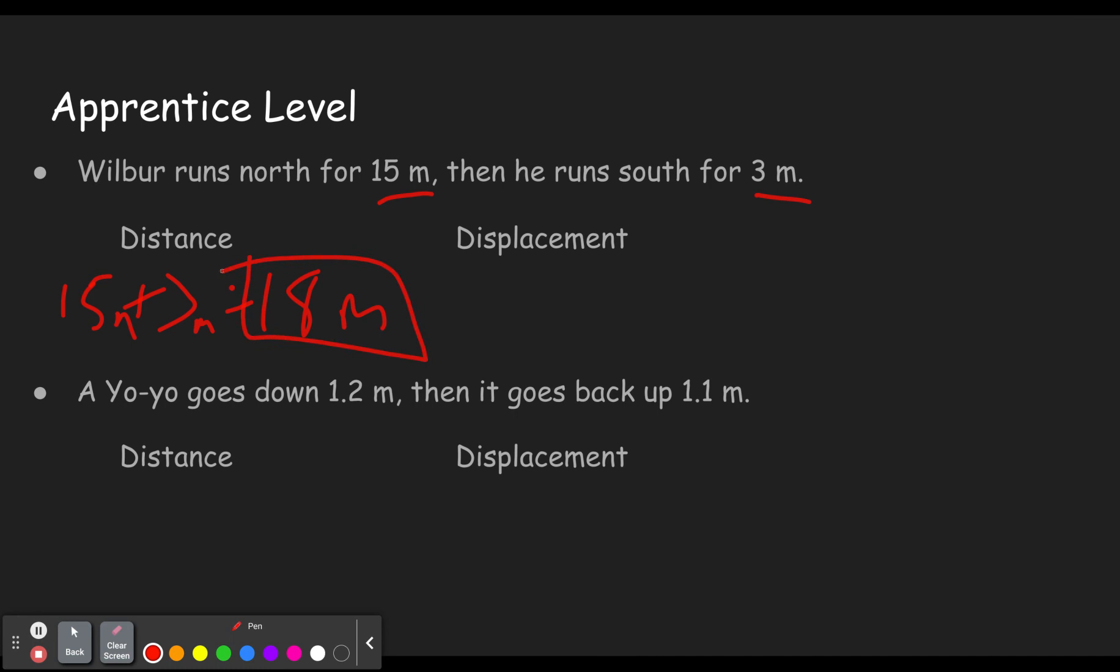But what's his displacement? How far does he end up from where he started? Well, he goes north 15 meters. By the way, we'll learn later vectors can be represented with arrows. But conceptually, you'll see the idea. Three meters south. So 15 meters north, three meters south. How far does he end up from where he started? Well, he started here and he ended up here, and that would be 12 meters. Because the three meters was in the opposite direction, we subtracted it.